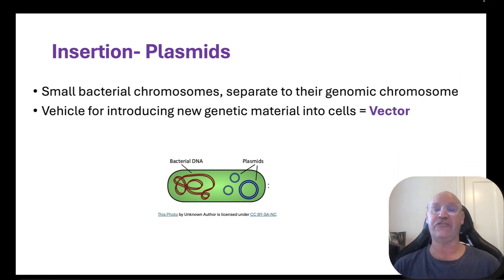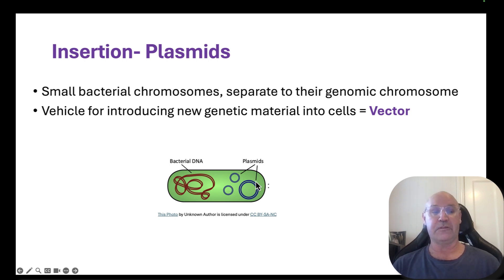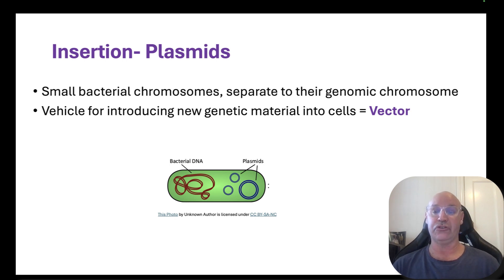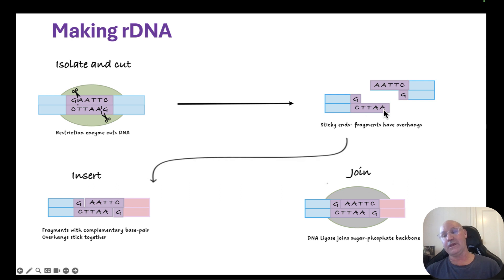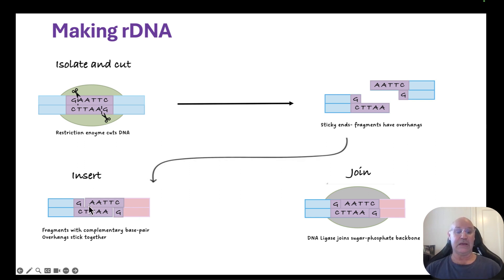Then we insert it into a plasmid. The genomic chromosome for bacteria is in a big, long, circular chromosome, but there are additional chromosomes called plasmids, and it's these plasmids that we use as the vector to introduce new genetic material. First, we identify the gene of interest, then we isolate and cut it using a restriction enzyme. The result is a cut with sticky ends. We then insert the gene of interest into the plasmid, and it sticks together at these complementary base pairs.